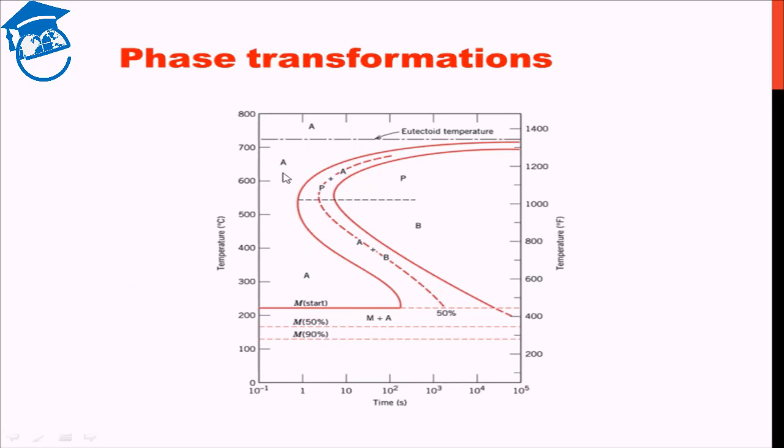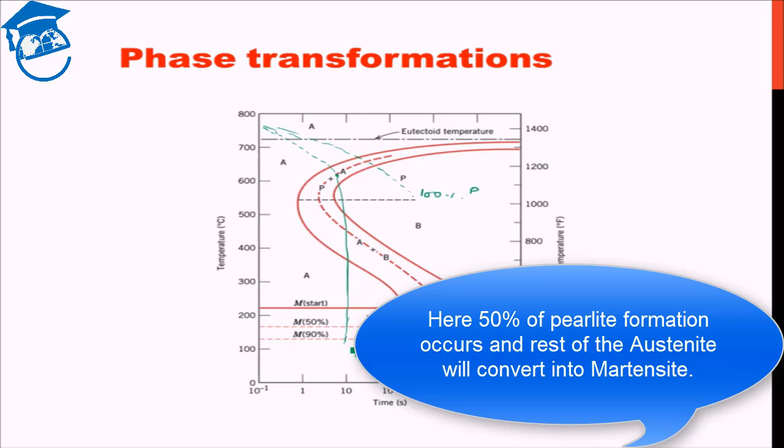Now let us see some phase transformation scenarios. Suppose I use this cooling curve. Then I get 100 percent pearlite. Now let us suppose I use this cooling curve and then I quench it. Then what will happen here I will form almost 50 percent pearlite. But the rest of the austenite will now convert to martensite. Similarly, suppose we go here, we go into the bainitic region and then we quench it.